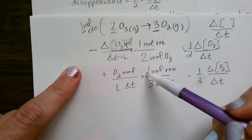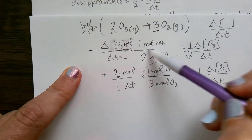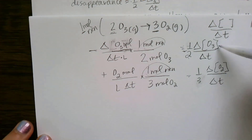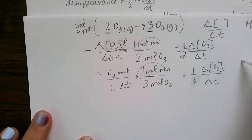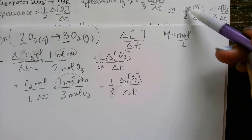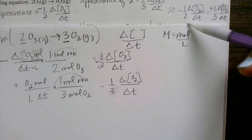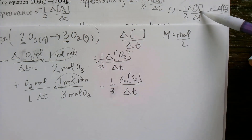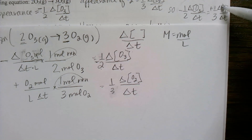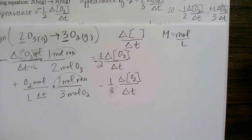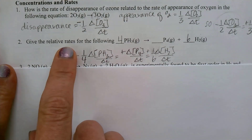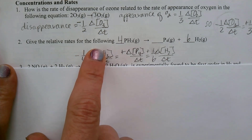Because both of these are for 1 mole of reaction, I can set them equal to one another, and just say that my disappearance of ozone is equal to the appearance of oxygen. Looking at number 2, we find the relative rates for the following reaction.